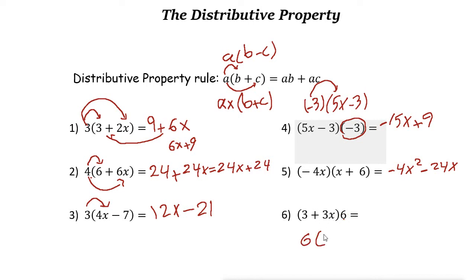In standard form we write 3x first. Doesn't matter, 3x + 3 is the same thing as 3 + 3x. Now 6 times 3x is 18x. 6 times 3 is 18.